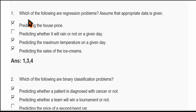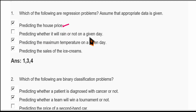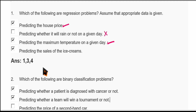Now let us see the first question: which of the following are regression problems? The first option, predicting the house price, is a regression problem. Predicting whether it will rain or not is a classification problem. Predicting the maximum temperature on a given day is continuously changing, so it is also a regression problem. Predicting the sales of ice creams is also a regression problem. The correct options are 1, 3, and 4.